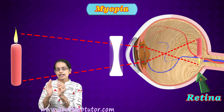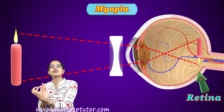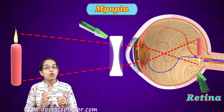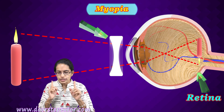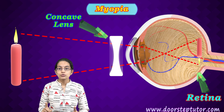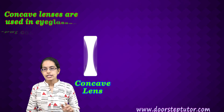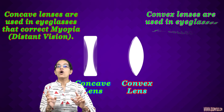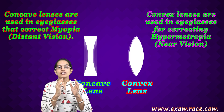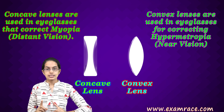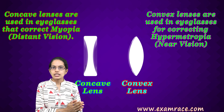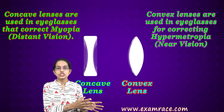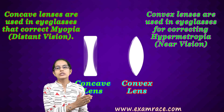The correction is used to adjust the formation of the image back onto the retina, and for that, a concave lens is used. Concave lens is used for distant vision correction. For near vision correction, a convex lens is used.